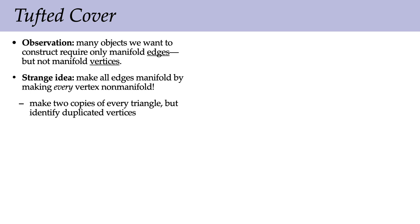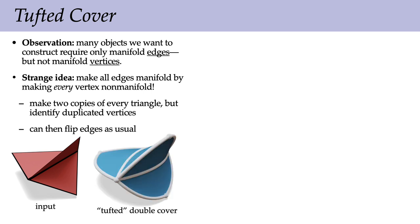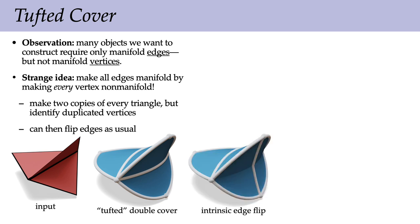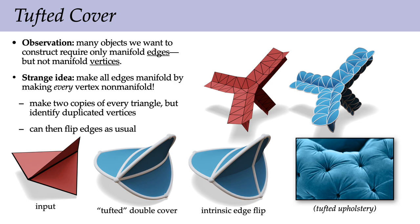Once we've done this, we can just go ahead and flip the edges as usual. So if we have input like this, we're going to construct what we call the tufted double cover. At the edges, this will look just like an ordinary mesh where we can perform edge flips to improve quality. Overall, if we start out with this red triangle mesh that is not manifold, we'll construct this tufted double cover. We call it the tufted double cover because at the vertices it kind of reminds you of tufted buttons, though I should point out that the displacement shown is just for visualization — the actual geometry looks exactly like two copies of the red mesh sitting right on top of each other.